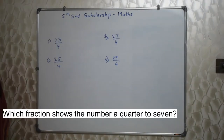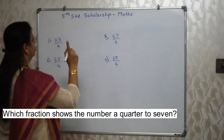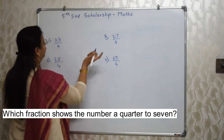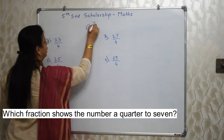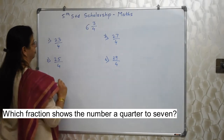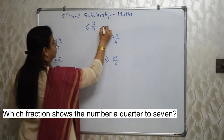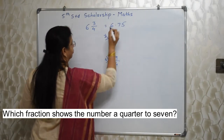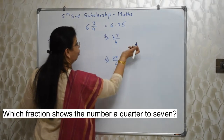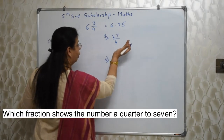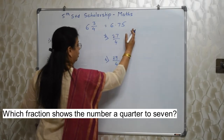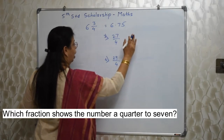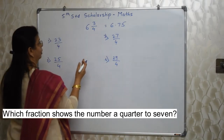Which fraction shows the number of quarter to 7? First, you should know what is the meaning of quarter to 7. Quarter to 7 is 6 and 3 upon 4 — or 6.75 — that is 6 and 3 quarters. A quarter is still left to become 7, same as a clock. So 3 quarters is 0.75.